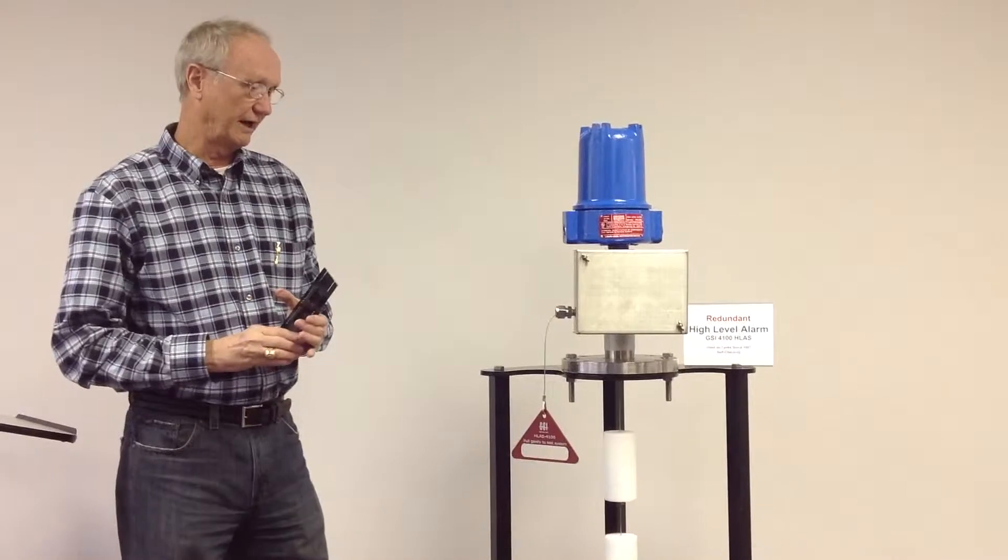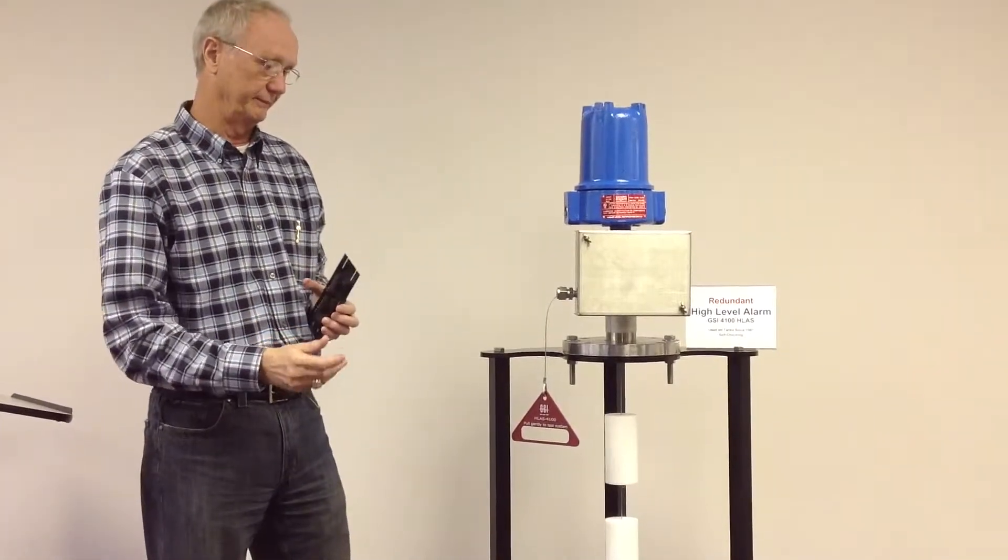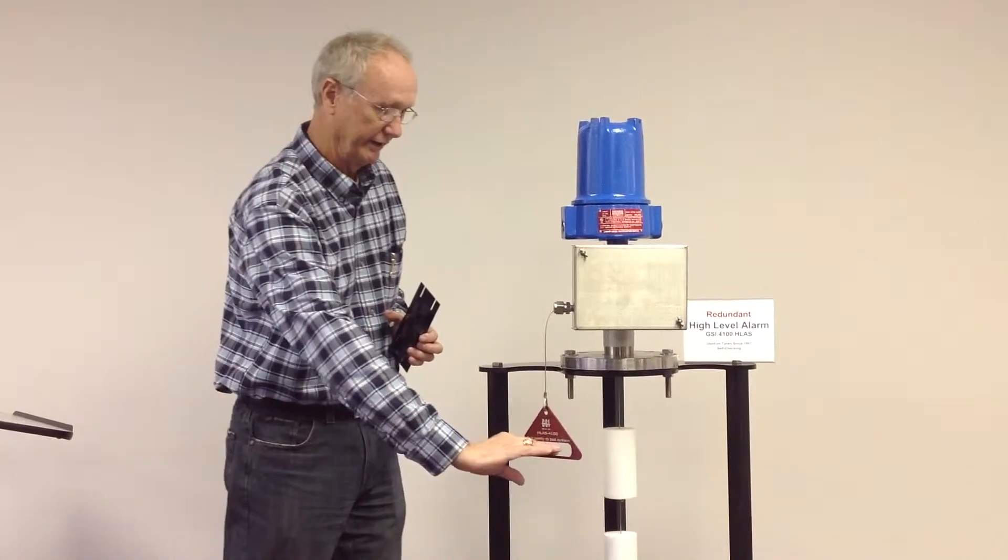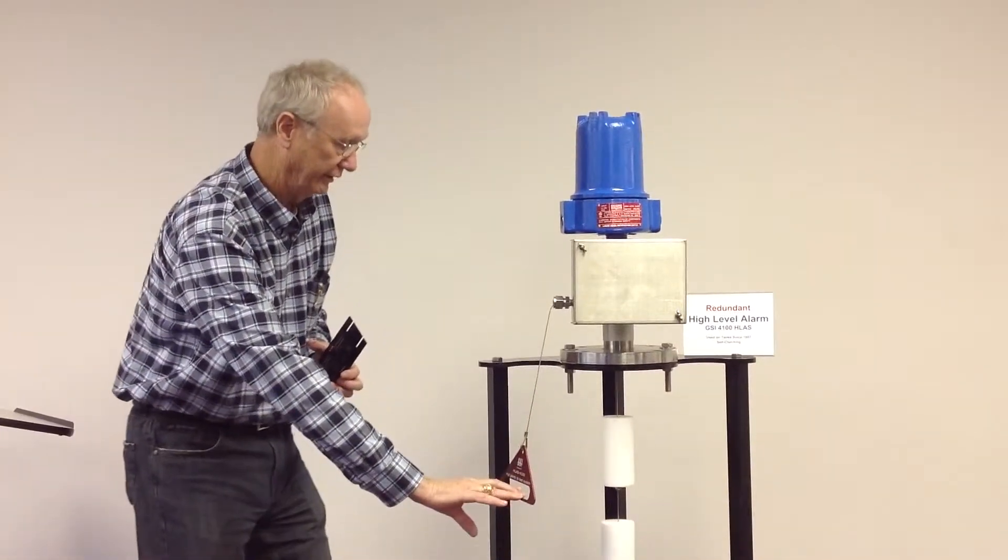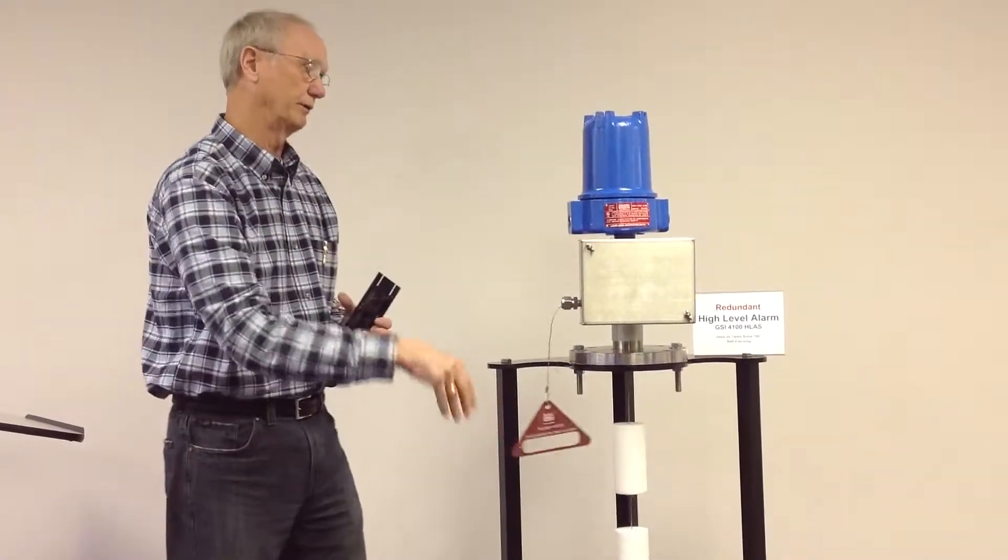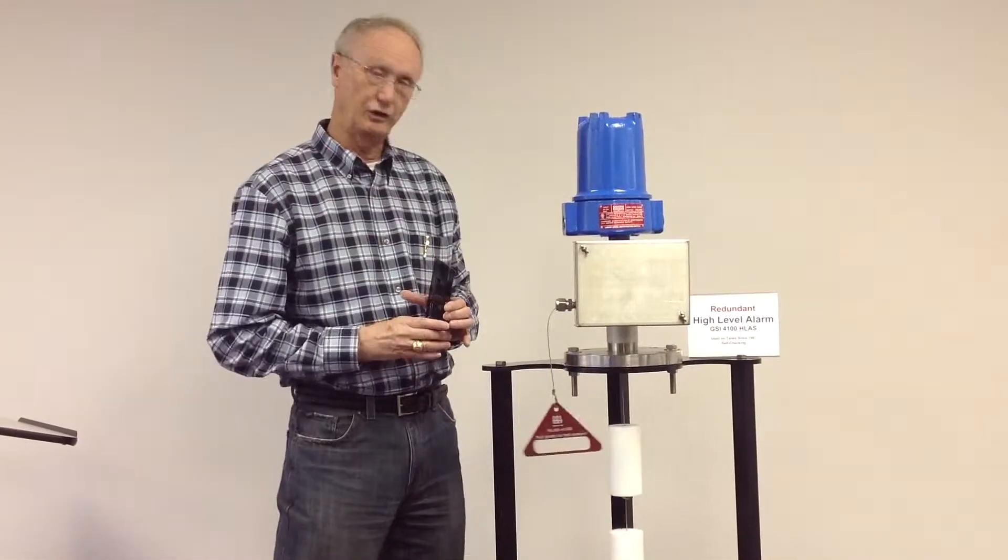This unit has an operational checker located at ground level. At any time, an operator can go out and pull the handle. It will lift both displacers and check all the components within the switch, including the spring.